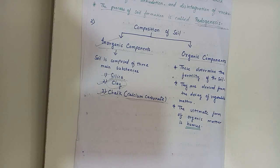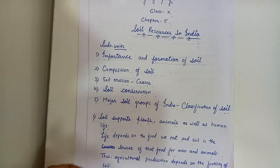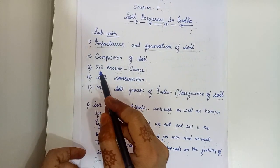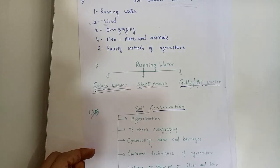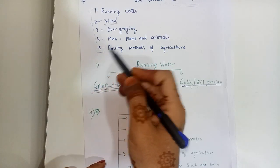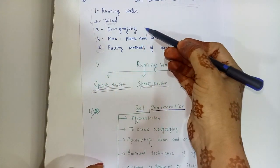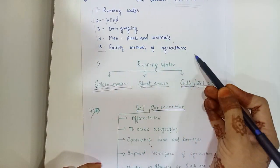For example, in Rajasthan the soil contains very less moisture, and whenever we move into coastal areas the soil contains much more moisture. Now we will discuss the third point, soil erosion. The main causes of soil erosion are: running water, wind, overgrazing, men, plants and animals, and faulty methods of agriculture.